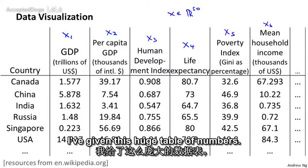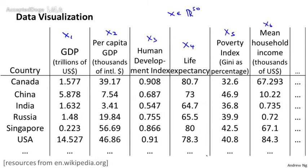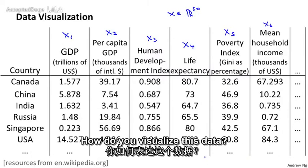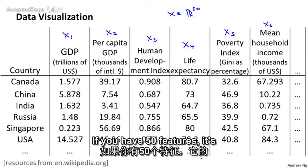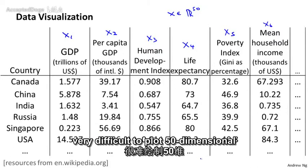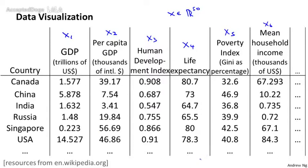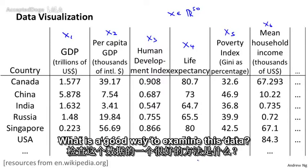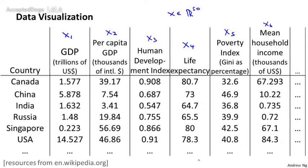So given this huge table of numbers, how do you visualize this data? If you have 50 features, it's very difficult to plot 50-dimensional data. So what is a good way to examine this data?